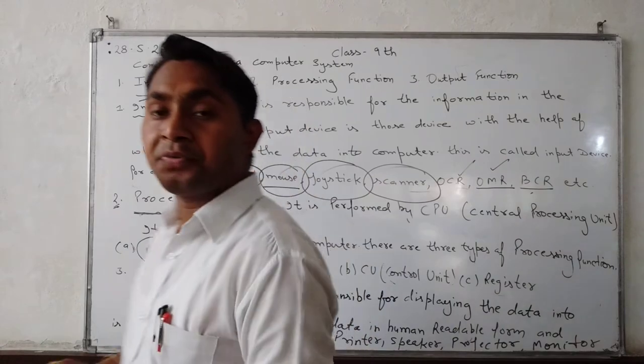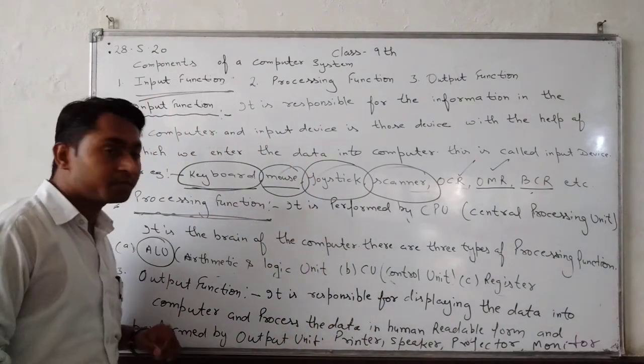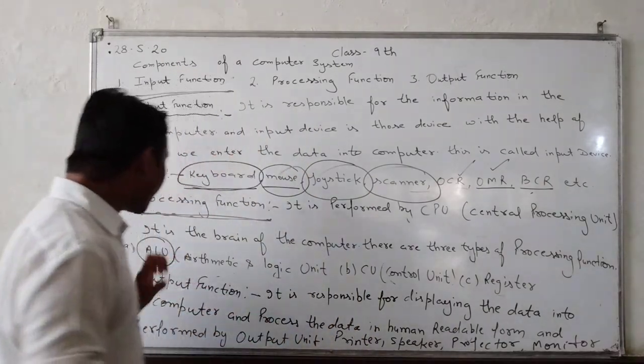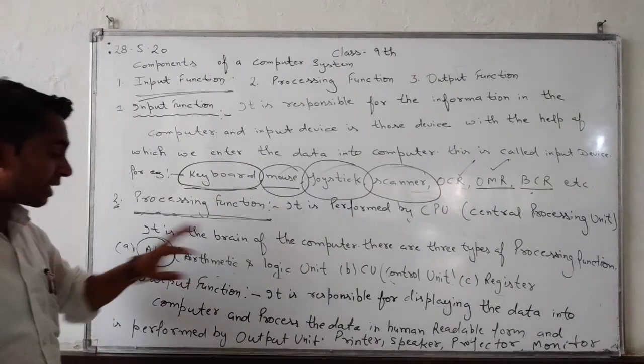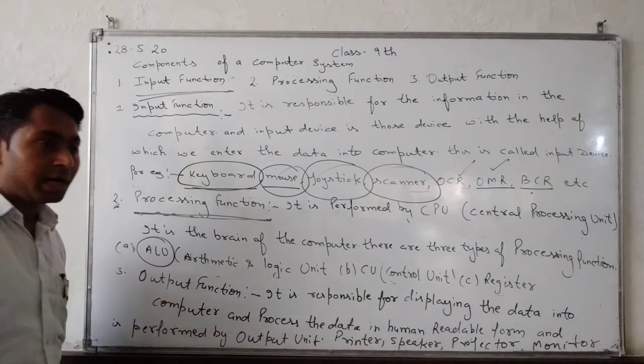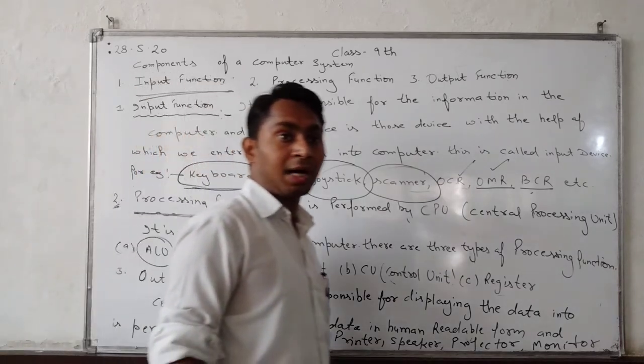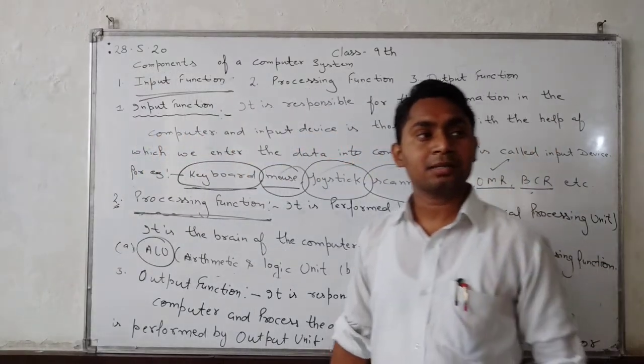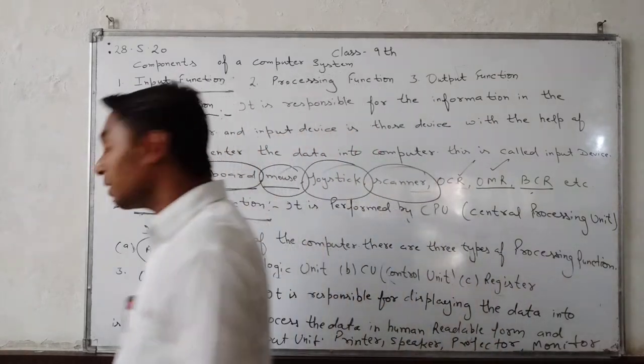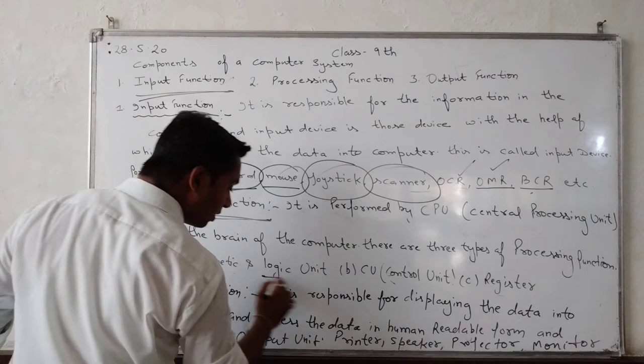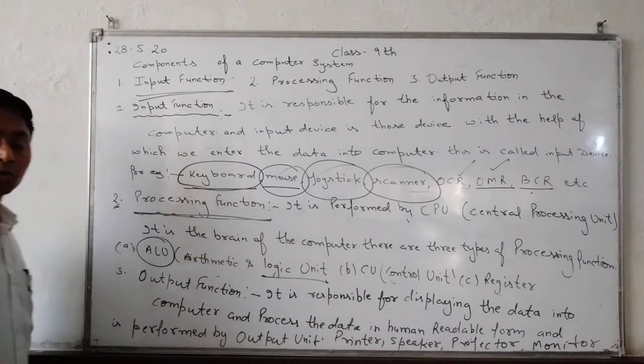Firstly we discuss the ALU. ALU are two types: first arithmetic unit and second logic unit. Arithmetic unit is performed the four types operation: first adding, subtracting, multiplication and division. Second logic unit.